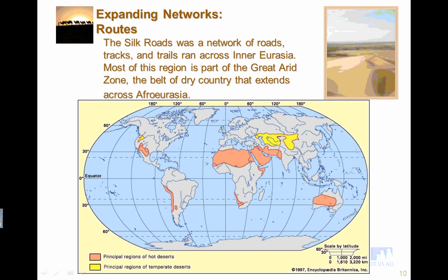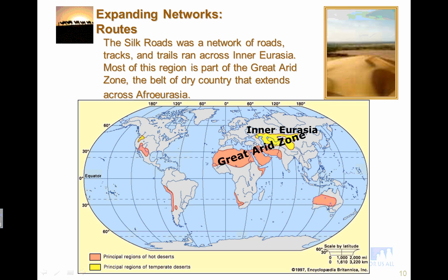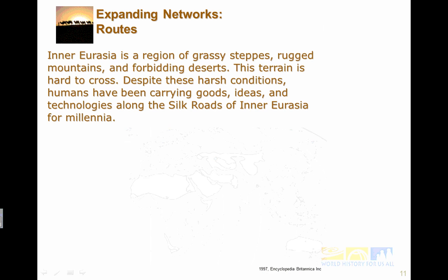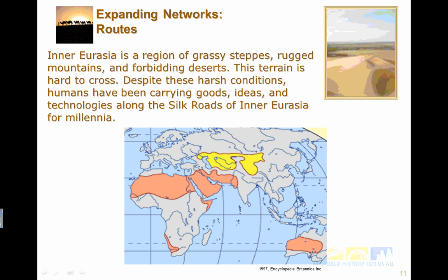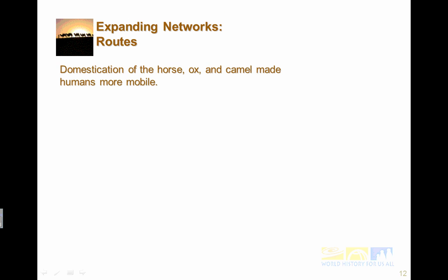The Silk Roads was a network of roads, tracks, and trails that ran across inner Eurasia. Most of this region is part of the Great Arid Zone — a belt of dry country that extends from Africa to Eurasia. Inner Eurasia is a region of grassy steppes, rugged mountains, and forbidding deserts, making this terrain really hard to cross. But despite these harsh conditions, humans have been carrying goods, ideas, and technologies along the Silk Roads for thousands of years. Domestication of the horse, ox, and camel made humans more mobile.